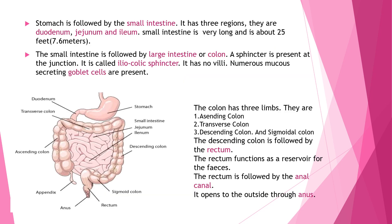The stomach is followed by the small intestine. The small intestine has three regions: duodenum, jejunum, and ileum. It is very long, about 25 feet or 7.6 meters. The small intestine is followed by the large intestine, or colon. A sphincter is present at the junction called the ileocecal valve or ileocecal sphincter.